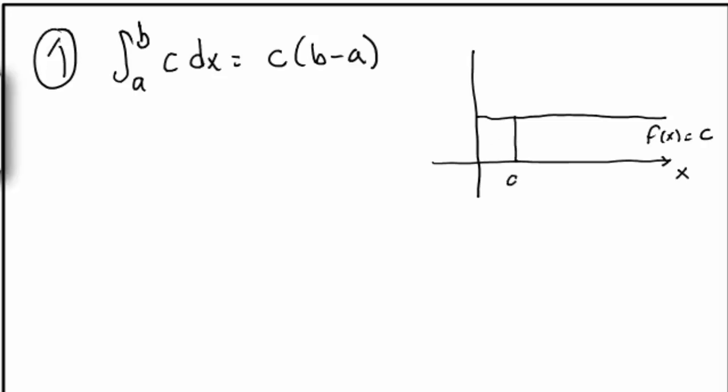Now I'm supposed to integrate this from a to b. And so the integral is this red area right here. Well, this is just a rectangle whose base is b minus a and whose height is c. So the area is c times b minus a.